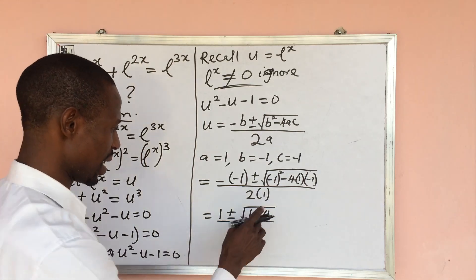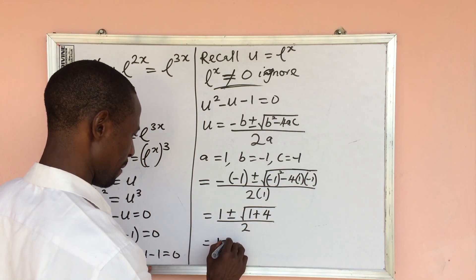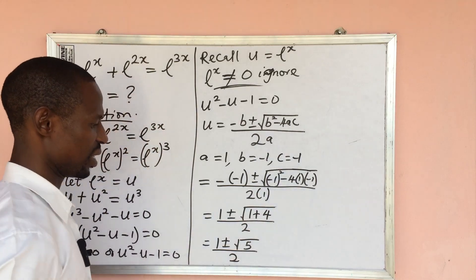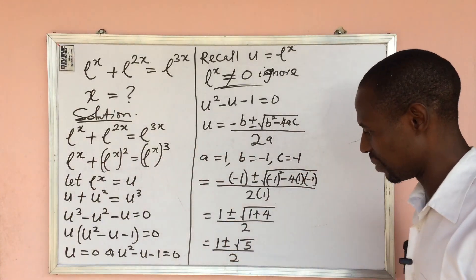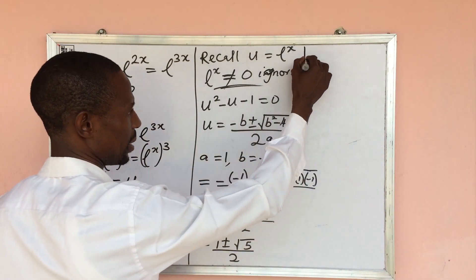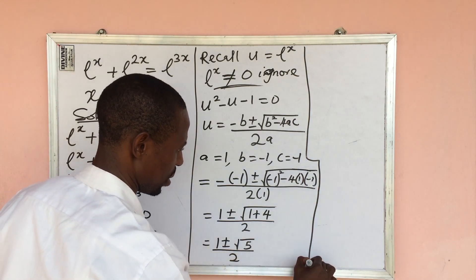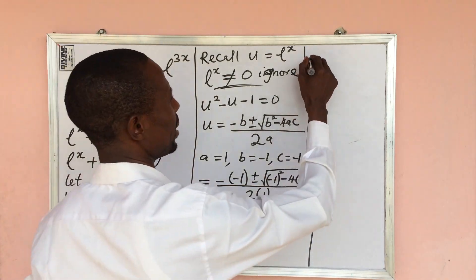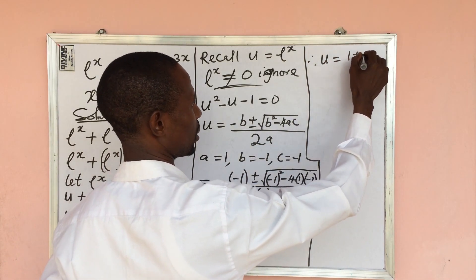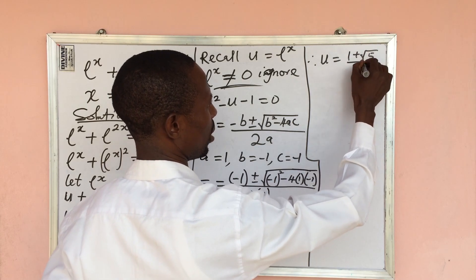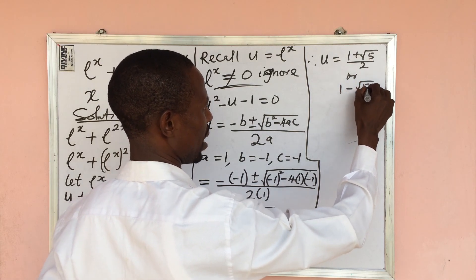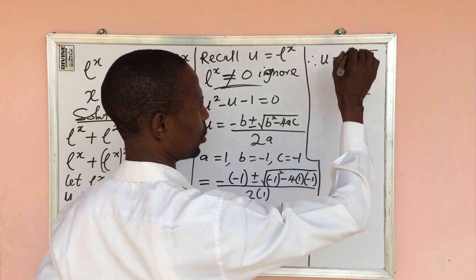We can simplify this to 1 plus or minus the square root of 5, all over 2. We have two solutions. Splitting them: u equals 1 plus root 5 all over 2, or u equals 1 minus root 5 all over 2.